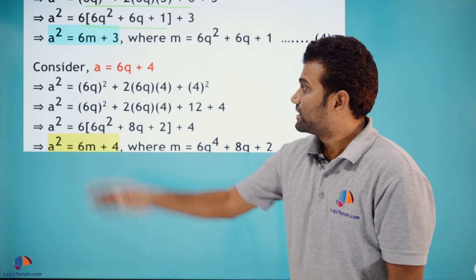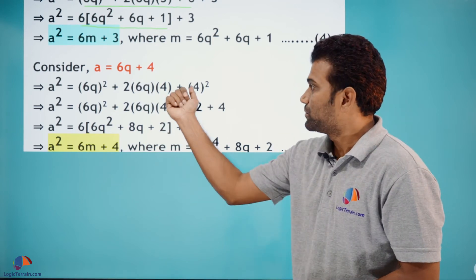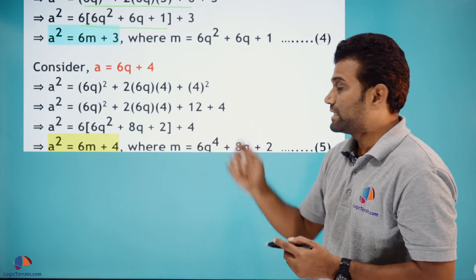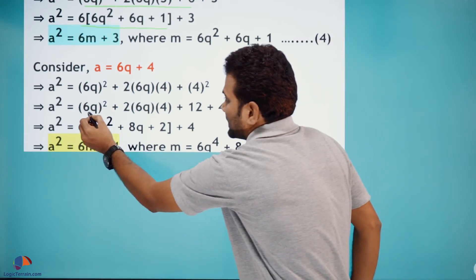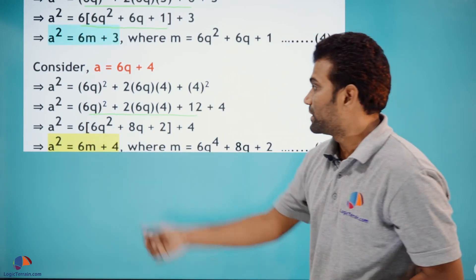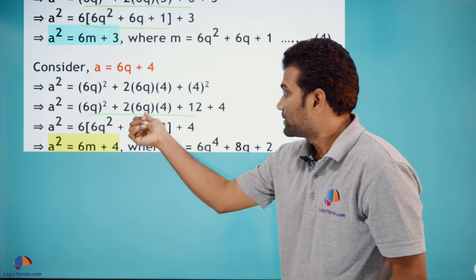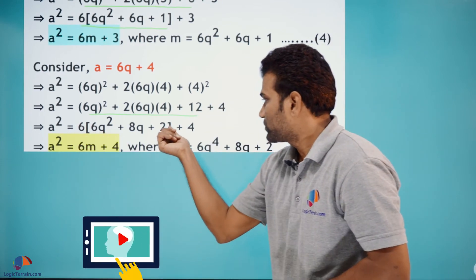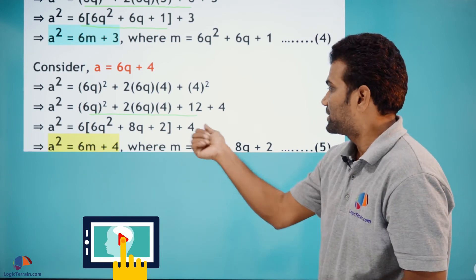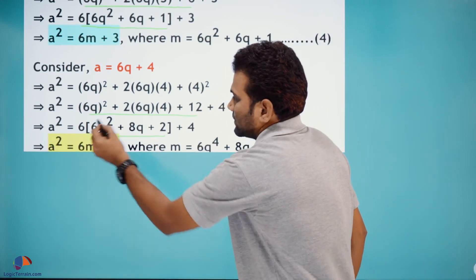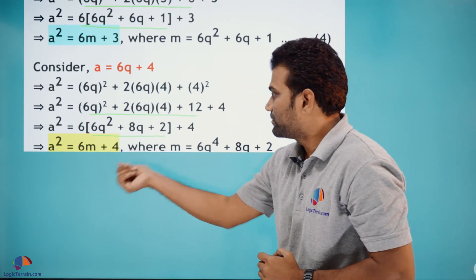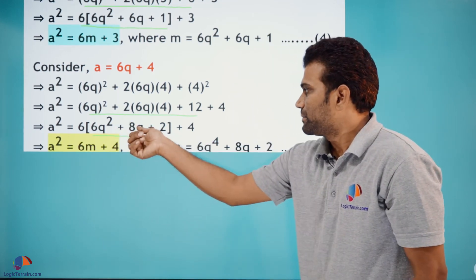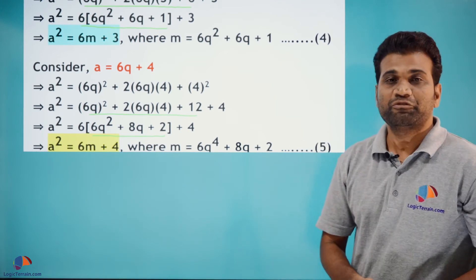Now consider a = 6q+4. Squaring both sides: a² = 36q² + 48q + 16. We split 16 as 12+4. Taking 6 common: a² = 6(6q²+8q+2) + 4. You can see this is of the form 6(something) + 4. So a² = 6m+4, where m = 6q²+8q+2. Let this be equation (5).